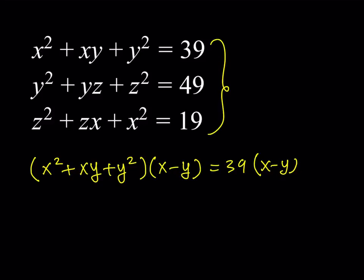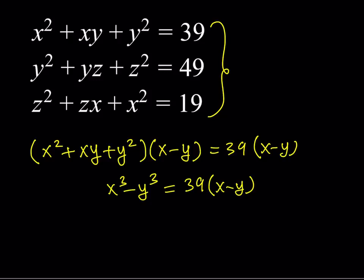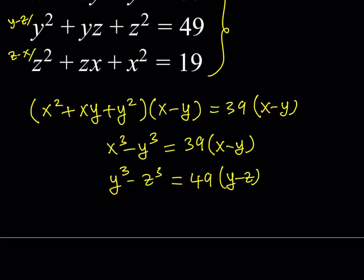When you do this, the left-hand side is going to be x cubed minus y cubed. And the right-hand side is just going to be 39 times x minus y. I'll do this to every single equation. I'm going to multiply the second one by y minus z, and multiply the third one by z minus x. The second equation becomes y cubed minus z cubed equals 49 times y minus z, and the third one becomes z cubed minus x cubed equals 19 times z minus x.